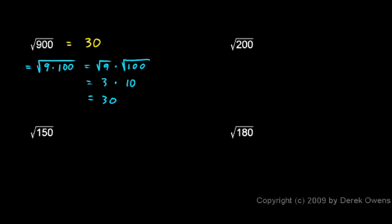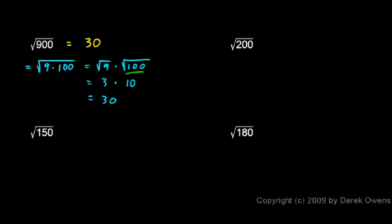So if it's not something that you immediately know, taking the thing under the radical and factoring it is often pretty helpful. Sometimes you can find perfect square factors that can then be taken out from under the radical and square rooted. So this 9 simply got square rooted and became a 3, and the same thing happened with the 100 — it became a 10.